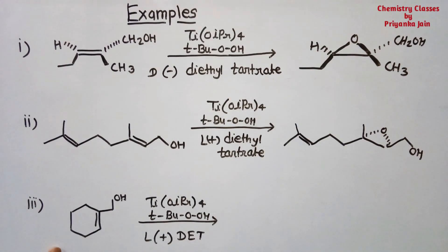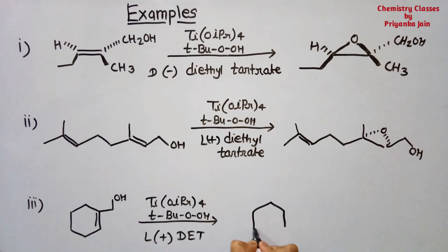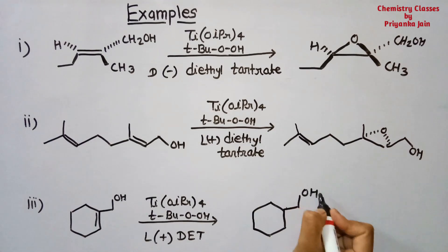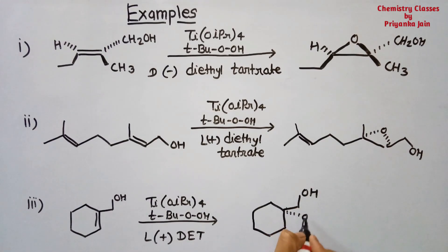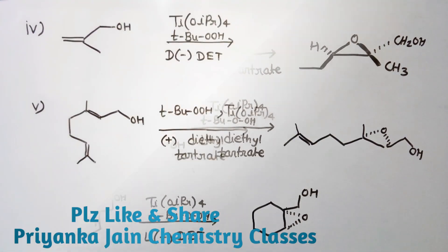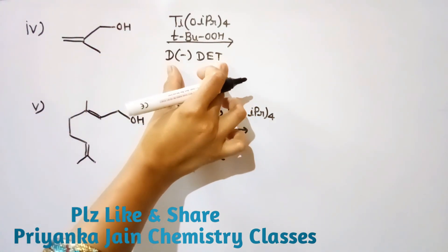In another example, we have a compound and similar reaction conditions apply. Here we have given L(+) diethyl tartrate, so the ring is formed below the plane. If we had been given (−) diethyl tartrate, then the ring would be formed above the plane.